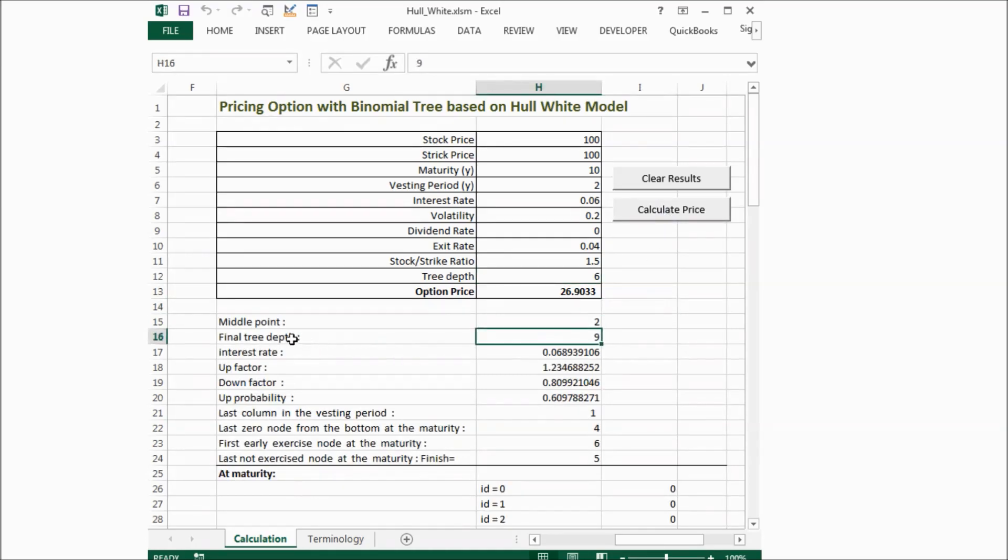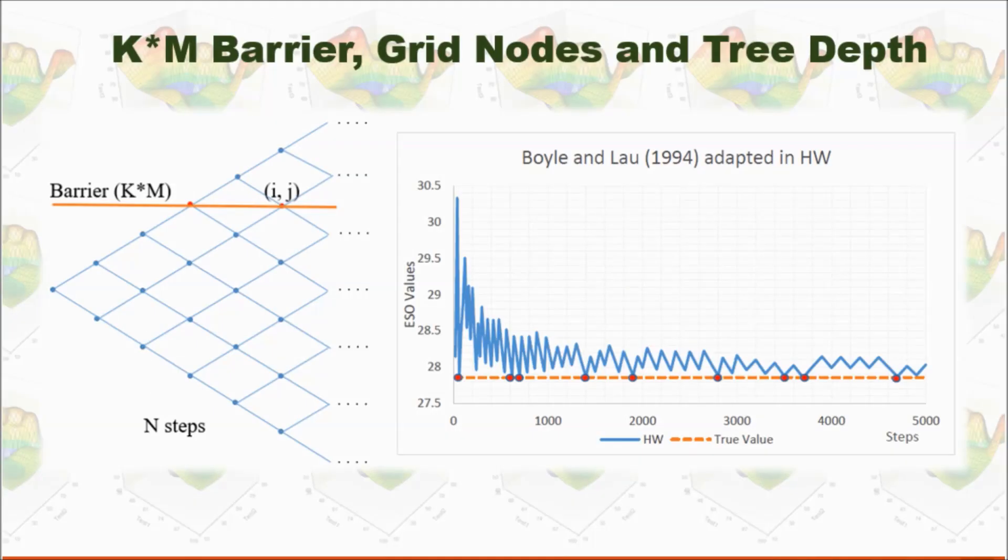We can see here, the final tree depth is 9 instead of 6. As I mentioned before, when the barrier goes through the grid nodes or is close to the grid nodes, it will increase the accuracy of the calculation.